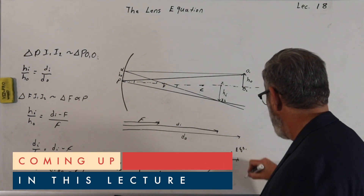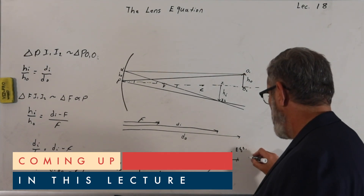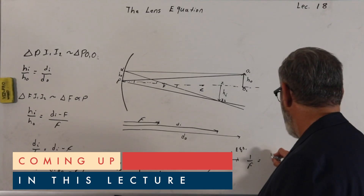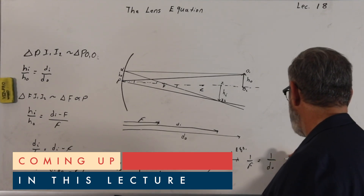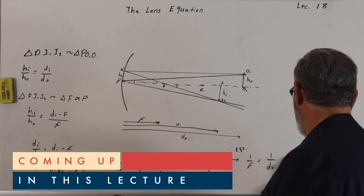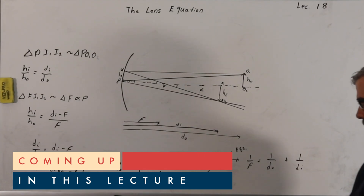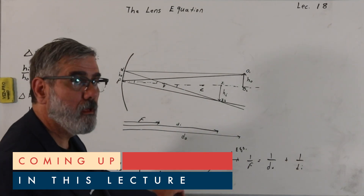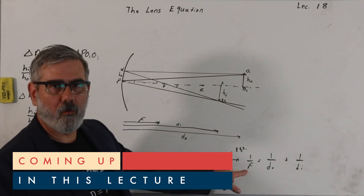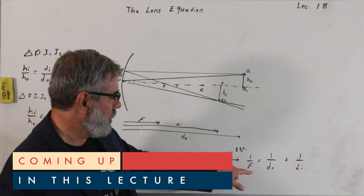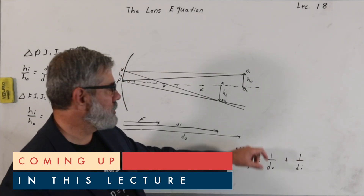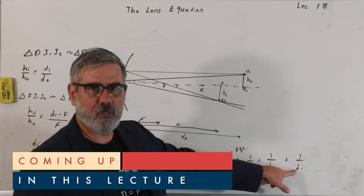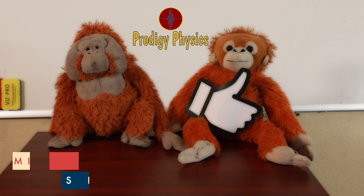The lens equation is 1 over f is equal to 1 over the object distance plus 1 over the image distance. Typically, you'll be given the focal length of the lens, or you'll know it, and you'll know the object distance — the distance to the object from the spherical mirror — and you can use that to determine where the image distance is going to be.